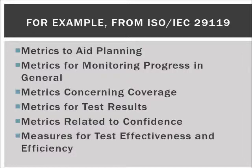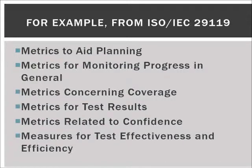The metrics to aid planning include things like number of risks, the size of the product, code complexity, the size of the test specification to be created, the size of the test data to be produced, number of tasks, how many cases we need to cover all functionalities, and how many are still left undefined. The metrics for monitoring progress include number of tasks done, tasks underway, elapsed time, working hours, expenditures — for instance, if the product is 40% complete and we have used over 70% of our budget, we know something is problematic.